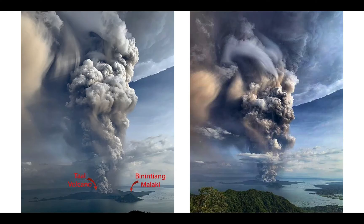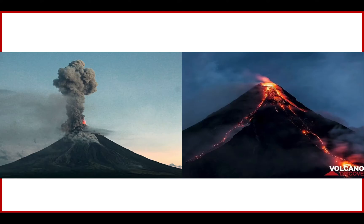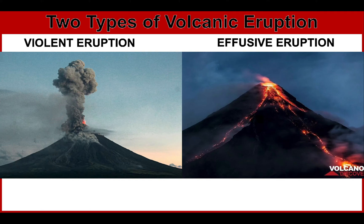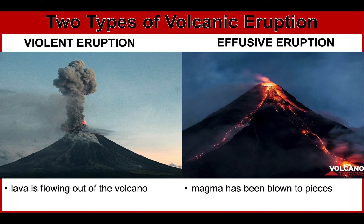This figure shows Taal Volcano erupting from the main crater, not the most visible Binintiang Malaki crater. These two figures show eruptions of Mount Mayon illustrating the two types of volcanic eruption: effusive, or quiet eruption, and explosive, or violent eruption. It is an effusive eruption if lava is flowing out of the volcano, and it is a violent eruption if the magma has been blown to pieces.